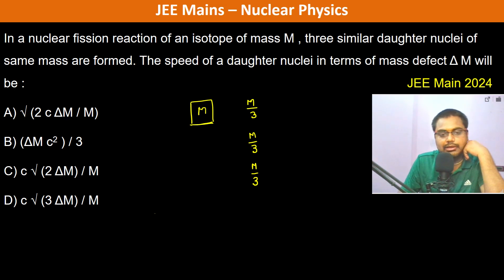Let's say the mass defect was ΔM. Therefore, the energy stored was ΔM·c². This equals 3 times (M/3)·v²/2, which is the total kinetic energy of all three daughter nuclei.